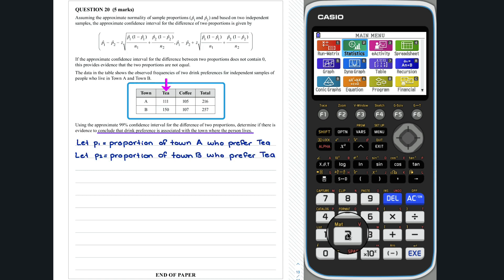In the table, we can see that the sample size for town A is 216 people and for town B 257. So, N1 is equal to 216 and N2 is equal to 257. Furthermore, the number of people in the sample who prefer tea in town A is 111, while 150 people prefer tea in town B. Therefore, the proportion of people who drink tea in town A and B can be evaluated as follows.